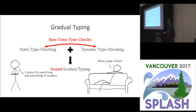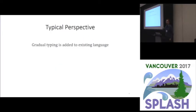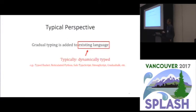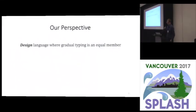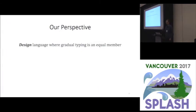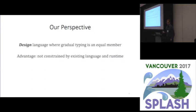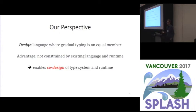A typical perspective on Gradual Typing is that we want to add it to an existing language, and often these languages are dynamically typed. To understand this talk, it's important to understand that our perspective is different. We care about designing a language where Gradual Typing is an equal member from the start, so you can consider interactions between Gradual Typing and the rest of the language. The advantage of that is that we are not constrained by existing legacy stuff, and it enables us to co-design all the components of our system.